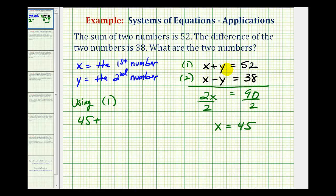So we have forty-five plus y equals fifty-two. Subtract forty-five on both sides of the equation. This would be zero, so we have y equals fifty-two minus forty-five is equal to seven.